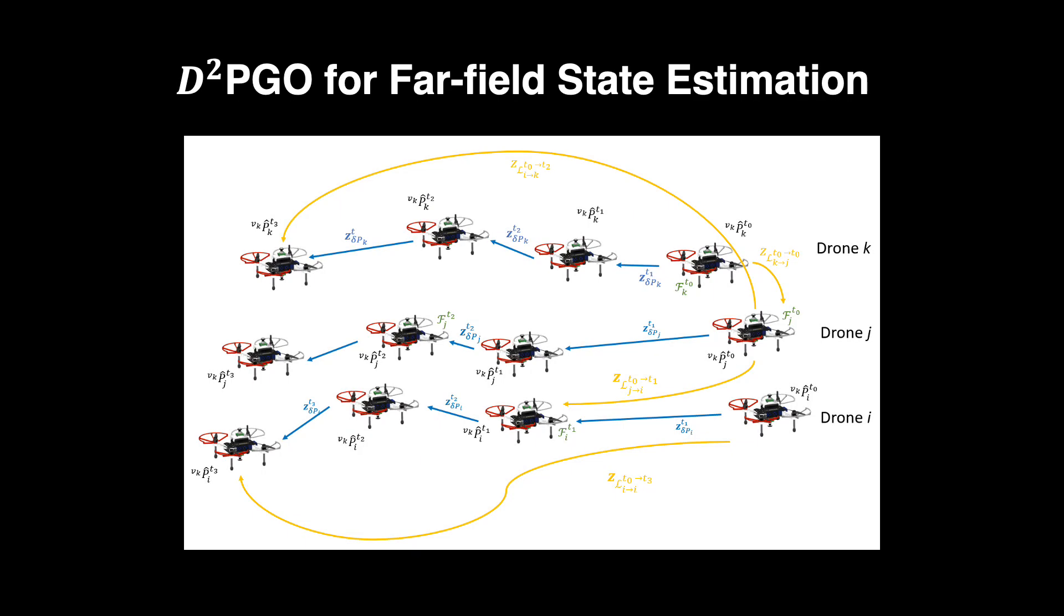Moreover, we also propose D-Square PGO for far-field state estimation. It is a two-stage distributed pose graph optimization method based on the asynchronous distributed optimization method, AROC.